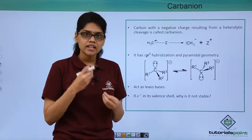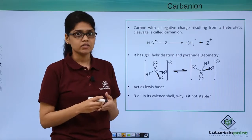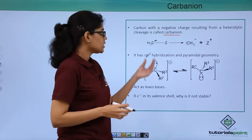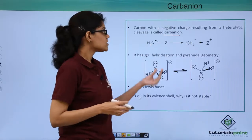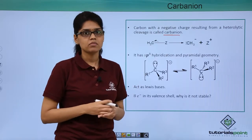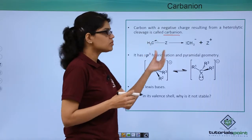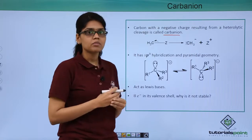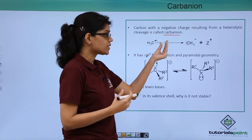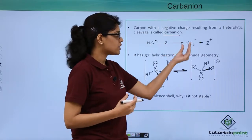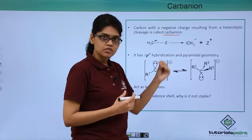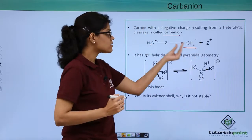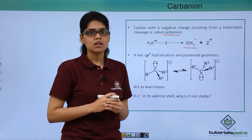A carbon with a negative charge, which results from a heterolytic cleavage, is called a carbanion. To understand this, let's look at an example. Here we have a compound CH3Z, where Z has lower electronegativity compared to carbon. When the C–Z bond undergoes heterolytic cleavage, the shared electron pair is retained by carbon because it has greater electronegativity than Z. The resultant species are CH3⁻, where carbon has a negative charge, and Z⁺. This species where carbon has a negative charge resulting from heterolytic cleavage is called a carbanion.